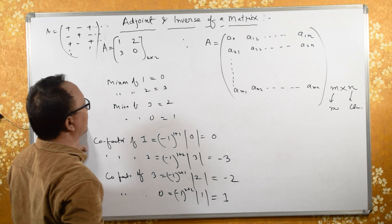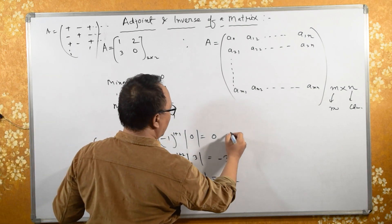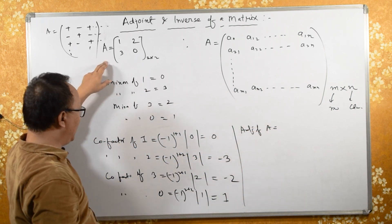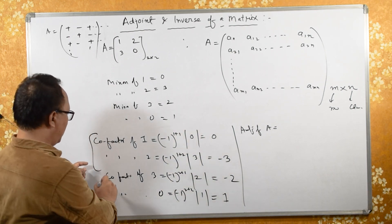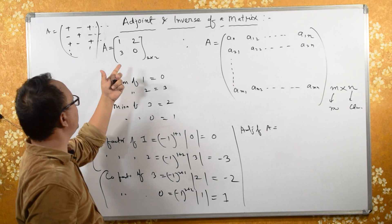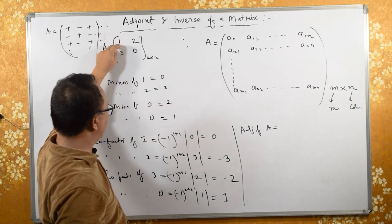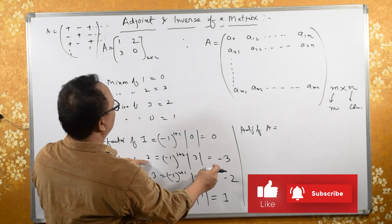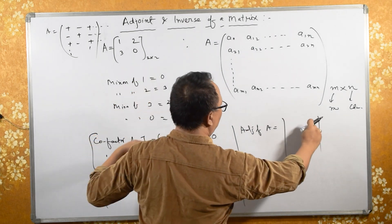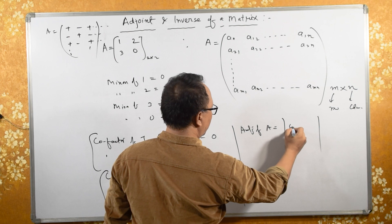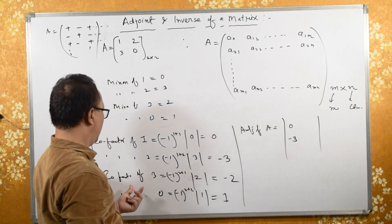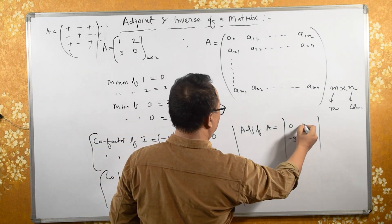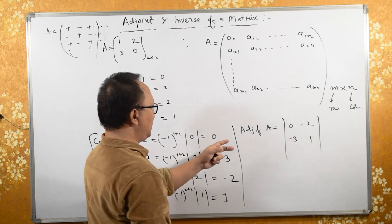Now, what is the adjoint? The adjoint of A is the transpose of the cofactor matrix of its elements. So the cofactors are: cofactor of 1 is 0, cofactor of 2 is minus 3, cofactor of 3 is minus 2, cofactor of 0 is 1. Writing them as columns instead of rows, the adjoint of A is: [0, minus 2; minus 3, 1].